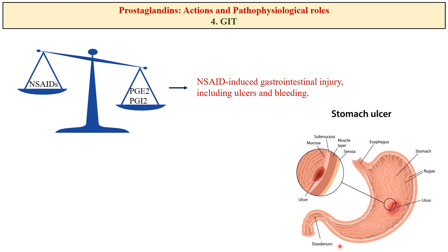Prostaglandins play a protective role in the gastrointestinal tract by promoting mucus and bicarbonate secretion, maintaining adequate blood supply to the mucosa, and regulating the integrity of the stomach lining. NSAIDs including ibuprofen and aspirin inhibit the enzyme COX, which is involved in prostaglandin synthesis, reducing production of protective prostaglandins in the stomach. The combination of reduced protective factors — reduced mucus and bicarbonate — and increased harmful factors like gastric acid results in gastric ulcer formation. Patients taking NSAIDs at high doses or long-term are at increased risk and should also take stomach-protective medications like proton pump inhibitors such as omeprazole, or antacids like ranitidine.